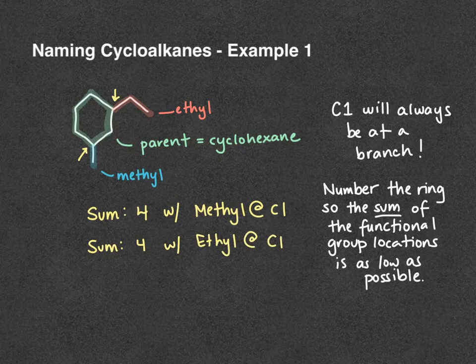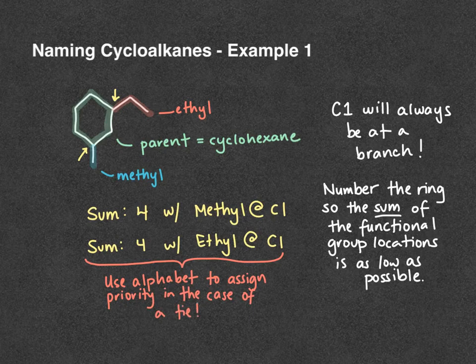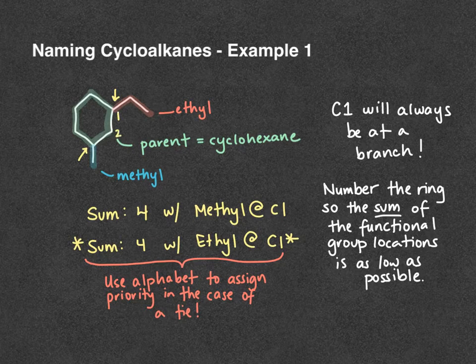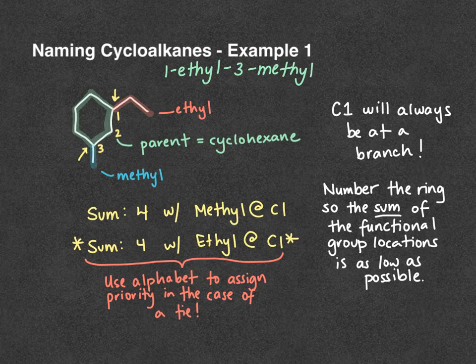Since we have a tie, we need to look to the alphabet to break it. Ethyl comes before methyl alphabetically, so ethyl will be carbon one and methyl will be carbon three. Putting this all together and listing them in alphabetical order, the name of our compound is 1-ethyl-3-methylcyclohexane.